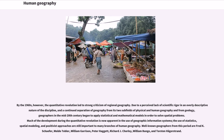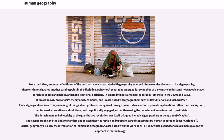Well-known geographers from this period include Fred K. Schaefer, Waldo Tobler, William Garrison, Peter Haggett, Richard J. Chorley, William Bunge, and Torsten Hagerstrand. From the 1970s, a number of critiques of the positivism now associated with geography emerged.